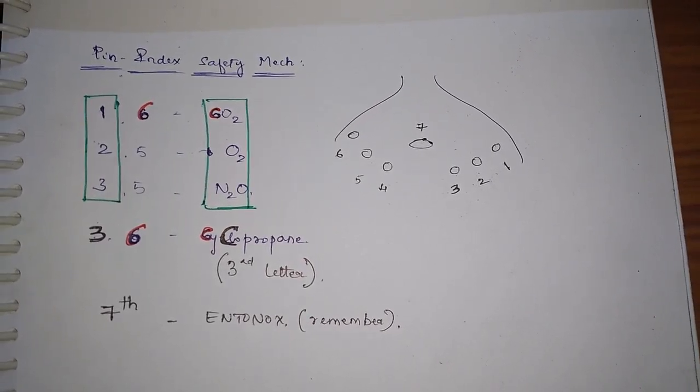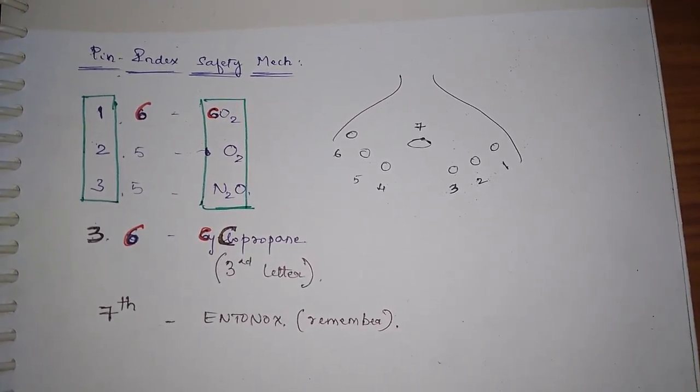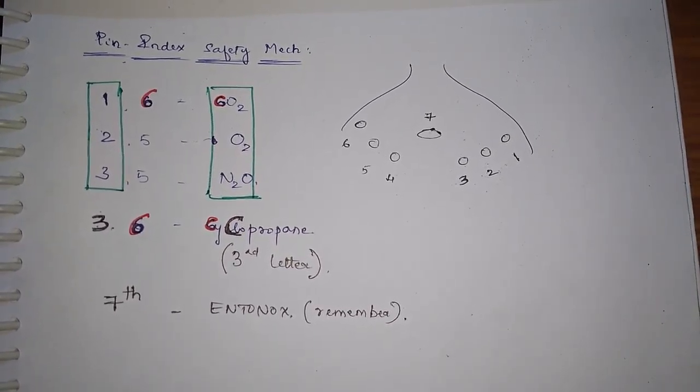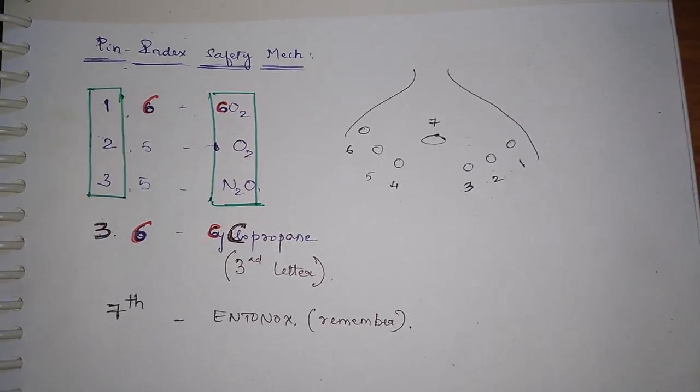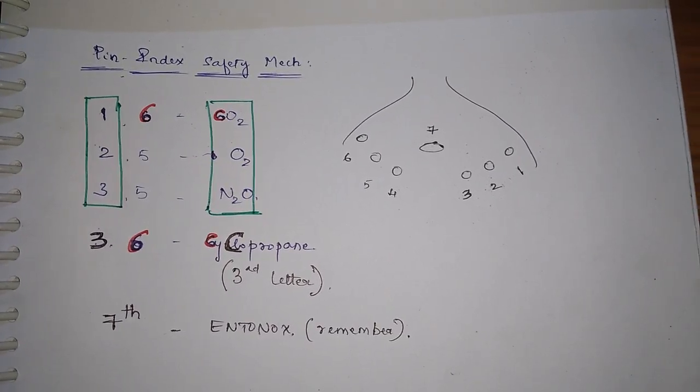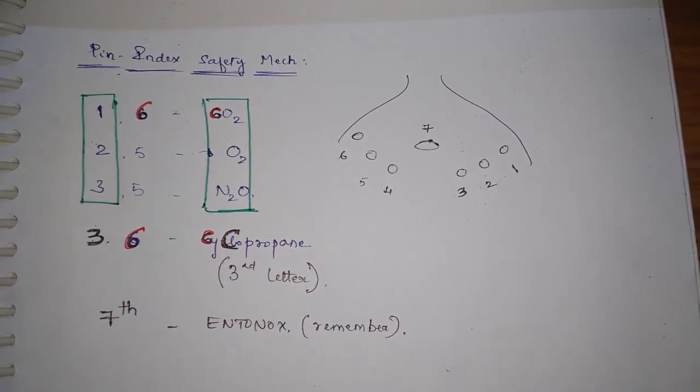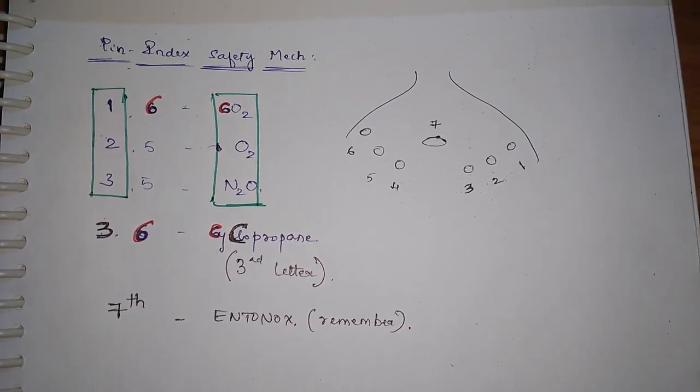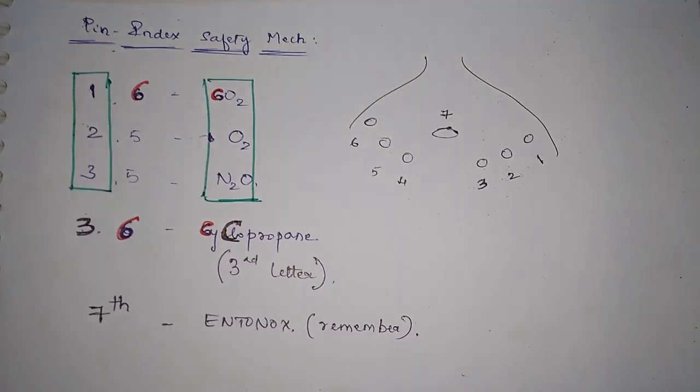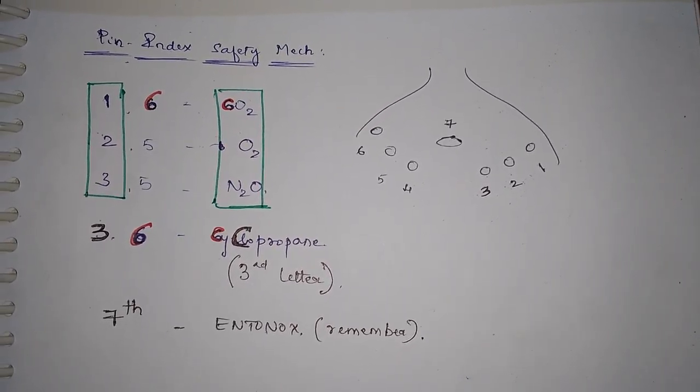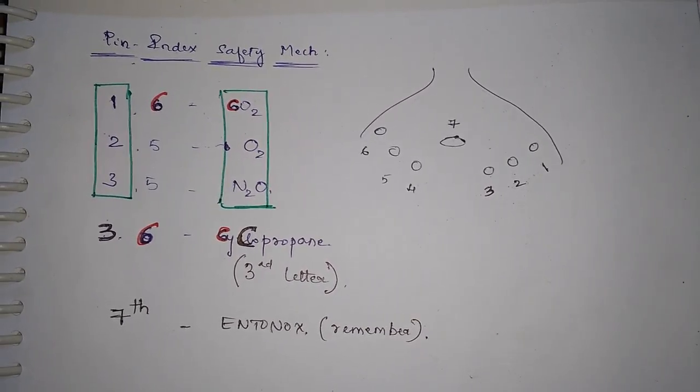C and C - you can make the number six with the use of the C's. So carbon dioxide and cyclopropane, we have to put six and six in the second one. And the remaining number that we have to make use of is five. So just fill five for oxygen and nitrous oxide.